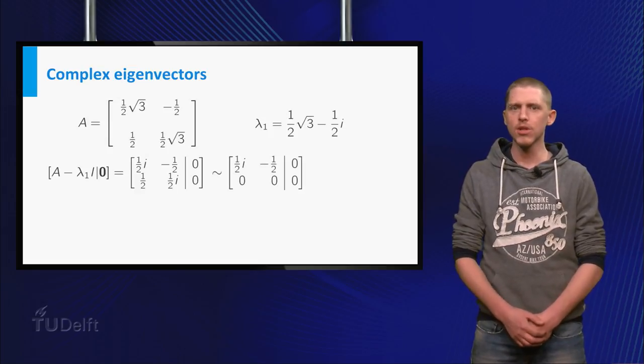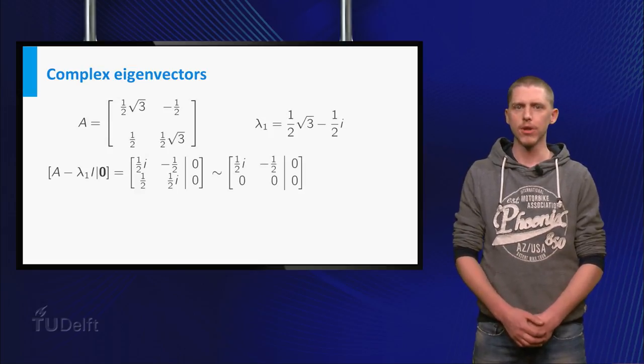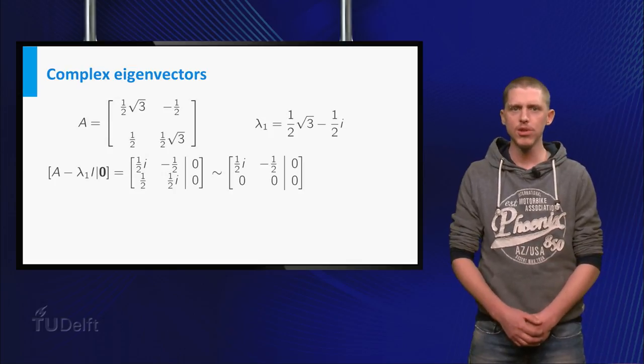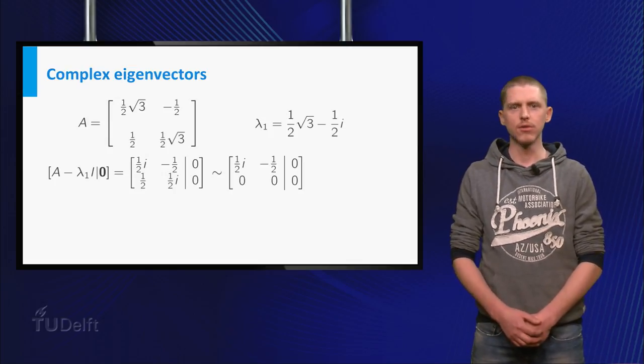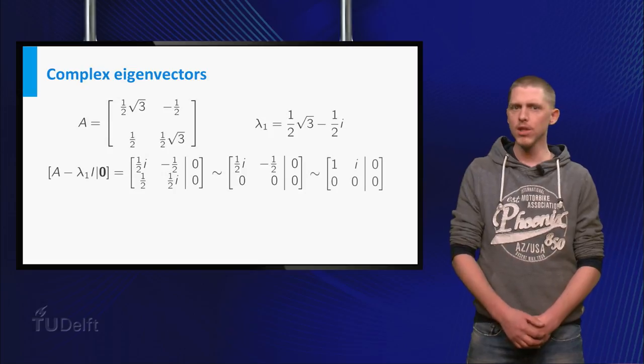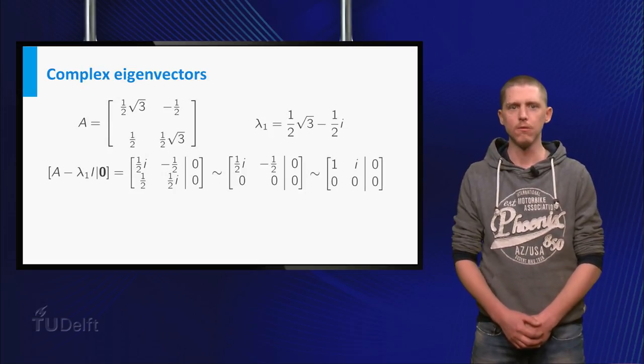So you can safely say that the first and second row of the augmented matrix represents the same solution set and we can set the second row to 0. Division by i over 2 gives the reduced row echelon form.